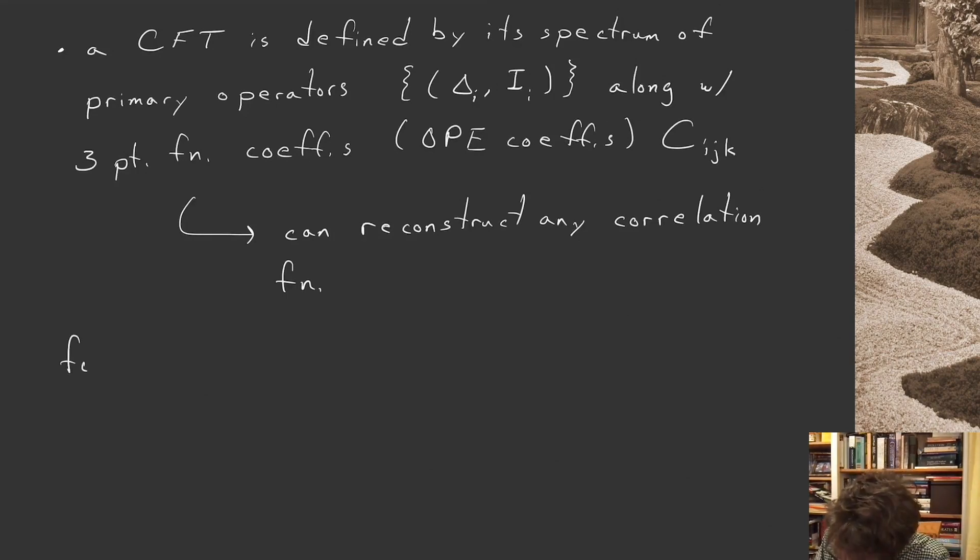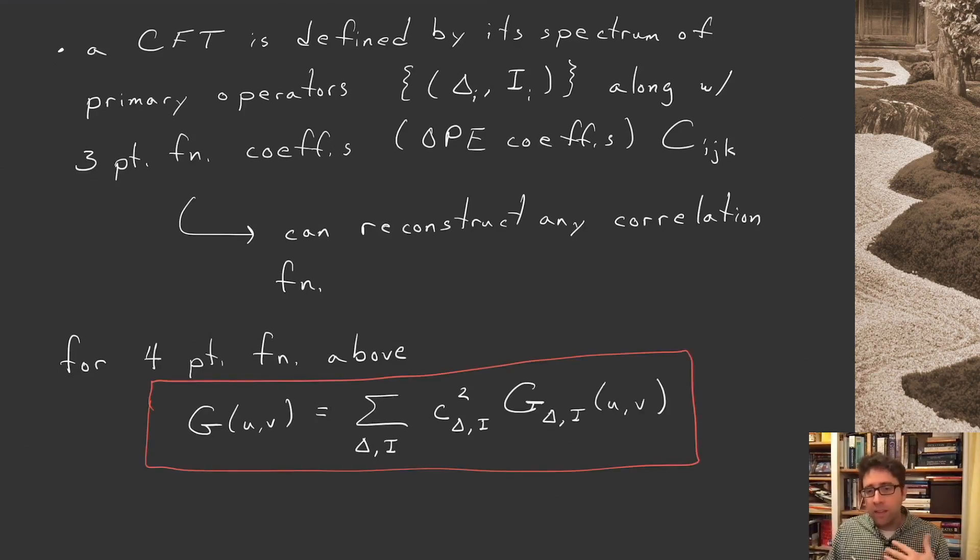For four-point functions, and this is going to be our starting point next week for the bootstrap, for the four-point function this arbitrary function g of u v, this g of two cross ratios, I can decompose this into conformal blocks, where the coefficients are these three-point functions, or operator product expansion coefficients. Let's try to make this a little bit more concrete.